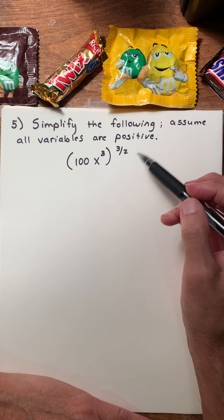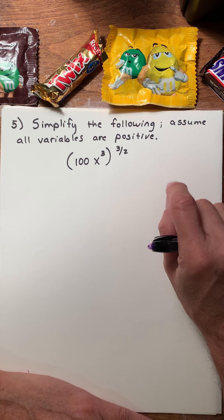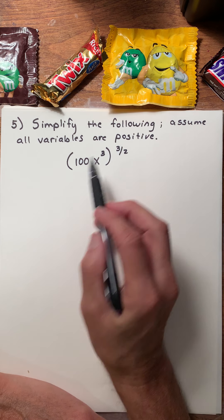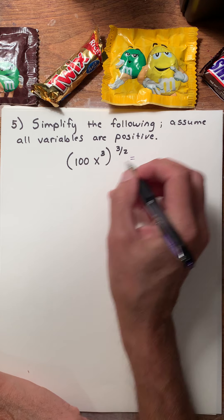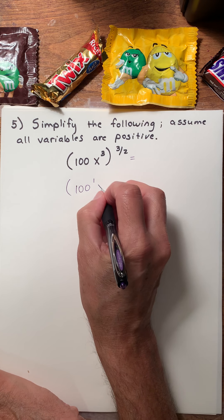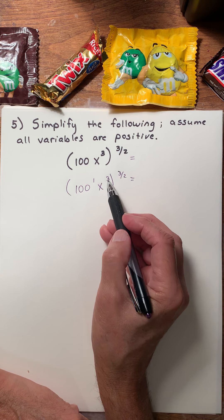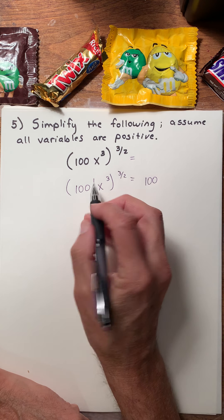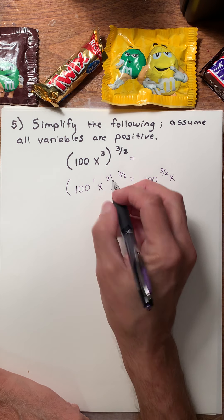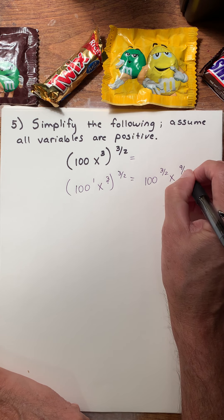Finally, simplify the following. This is rational or fractional exponents. But the good news about it is that the properties of exponents still hold. And if I have powers to a power, I multiply the exponents. So I'm going to multiply three-halves times one, three-halves times three. I get one hundred to the one times three-halves is just three-halves. And x, three is the same as three over one, that's nine over two.